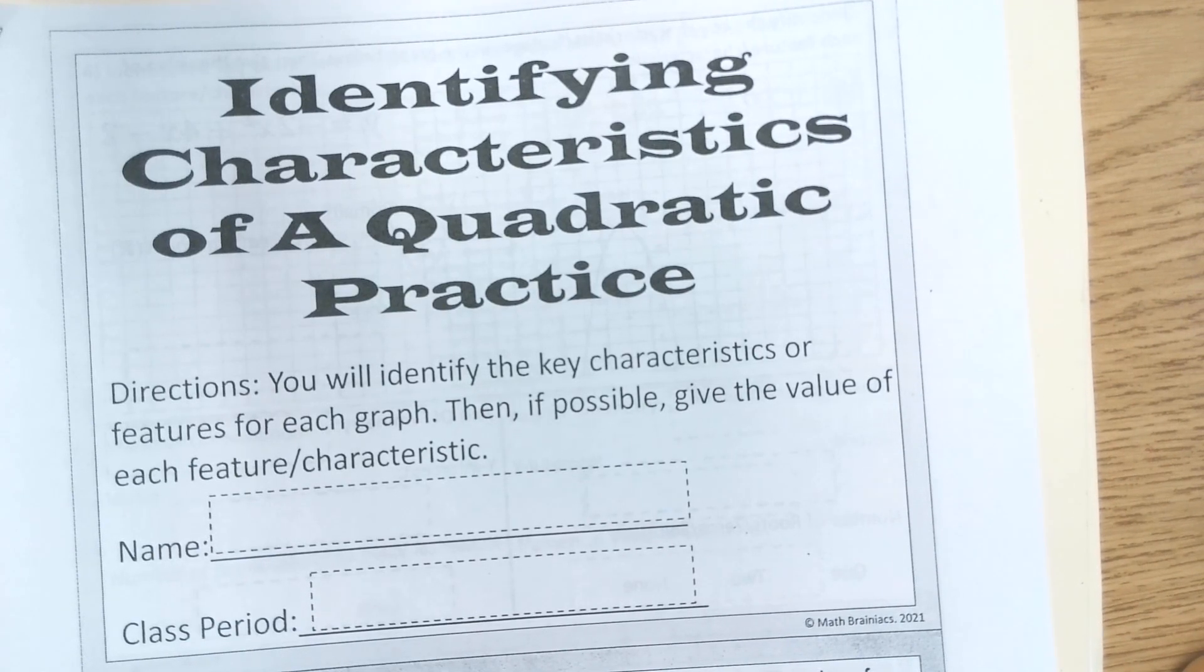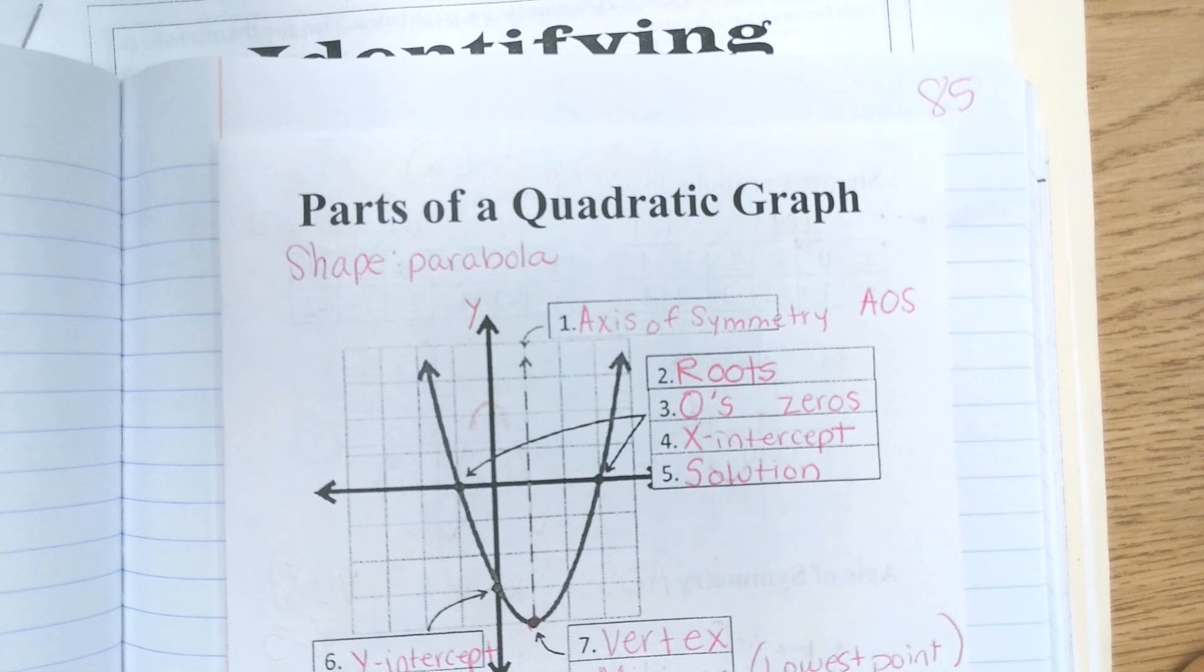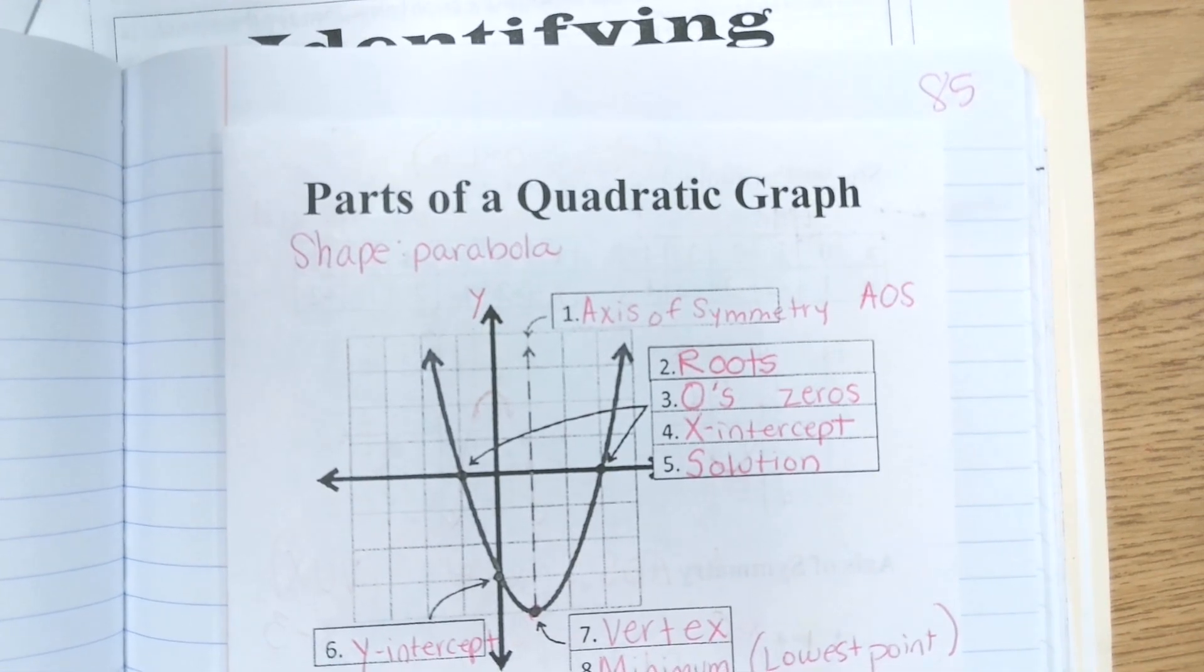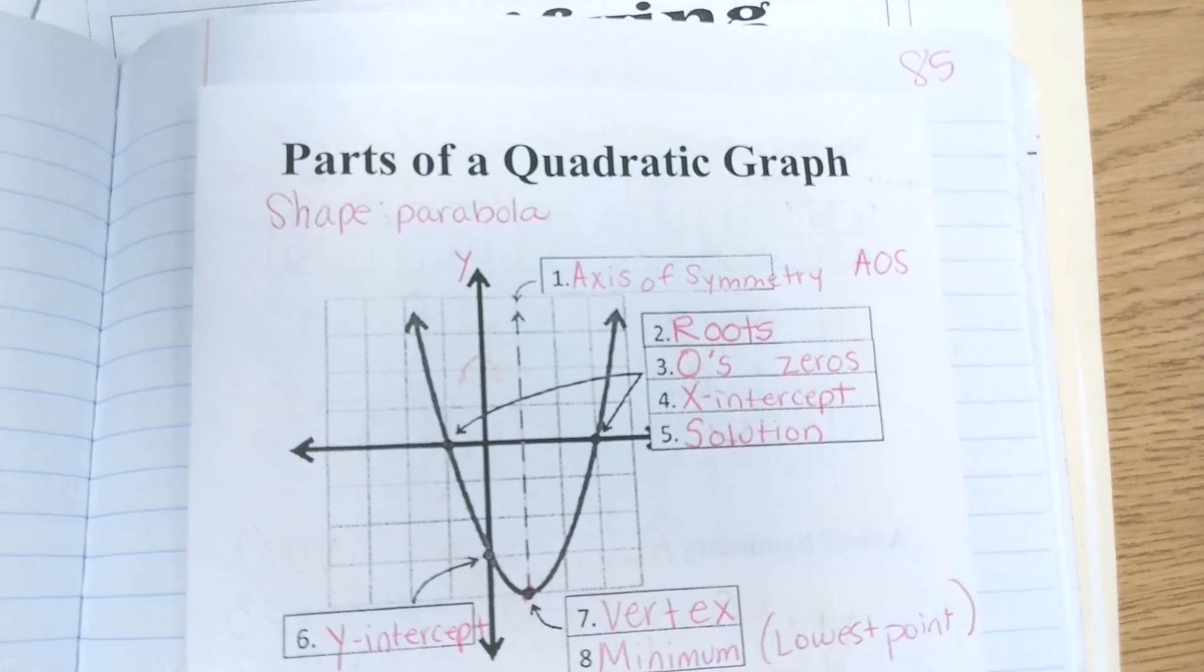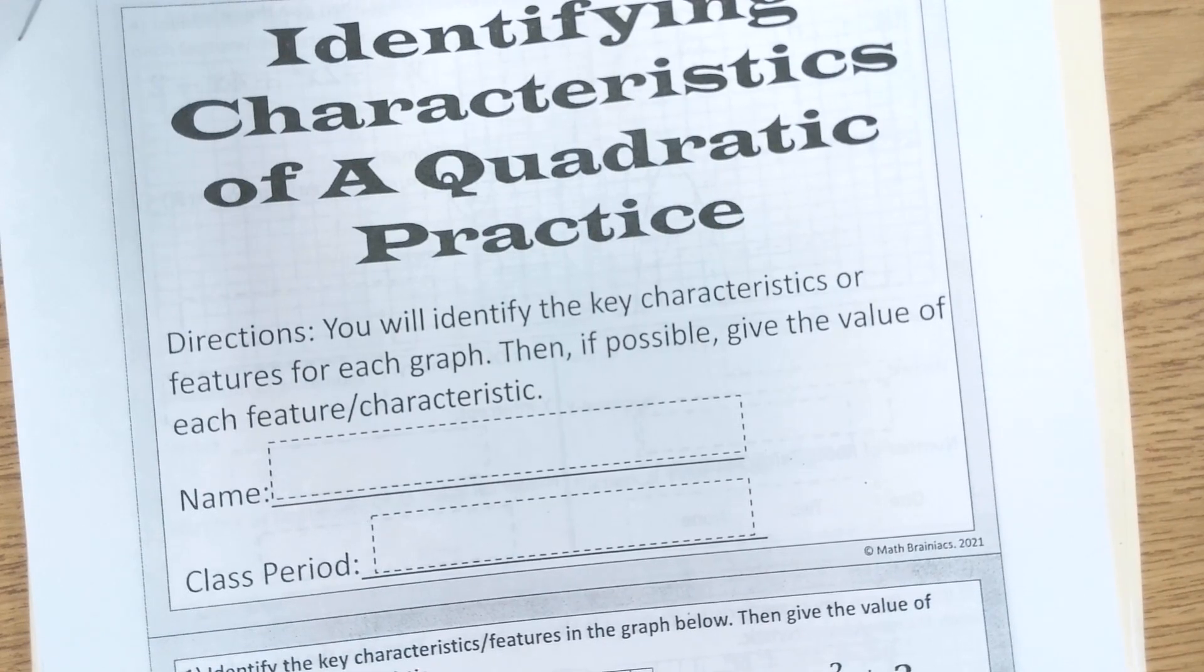As you're working on this it might be helpful to look back at your notes that say parts of a quadratic graph. These are all of the characteristics and key features of a quadratic. We are going to do one together and then you will finish the rest on your own and it will be due at the end of class.